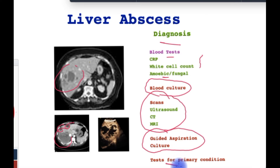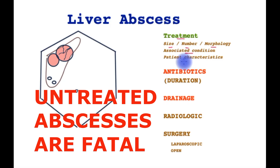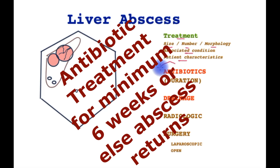It is important to tailor treatment of liver abscesses depending upon the size of the abscesses, their number, and their location within the liver. One also has to be aware of the associated condition as well as the general condition of the patient. The cornerstone of treatment is the appropriate antibiotic for bacterial infections, ensuring that the correct antibiotic is used.